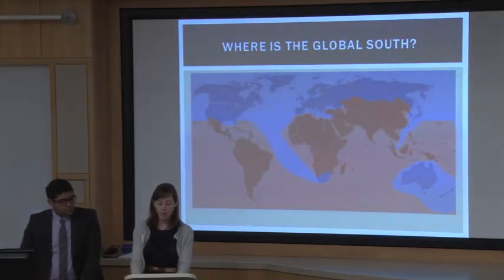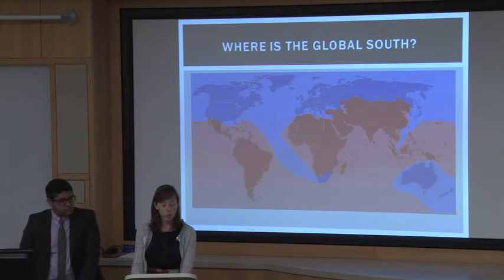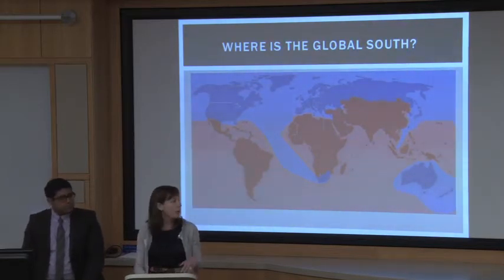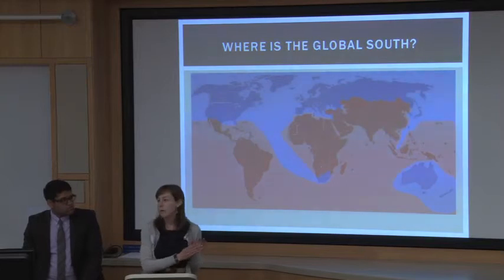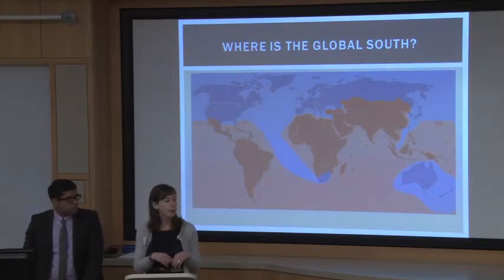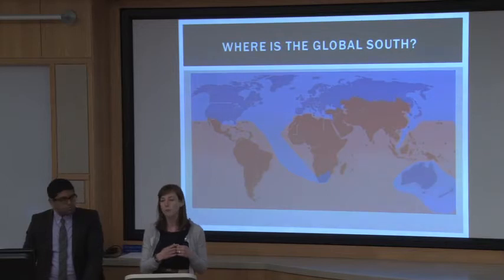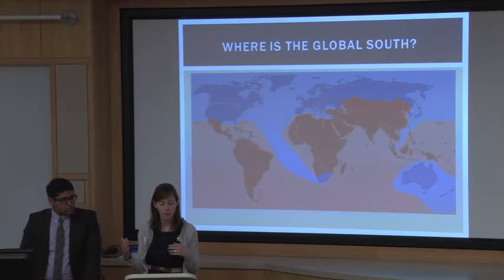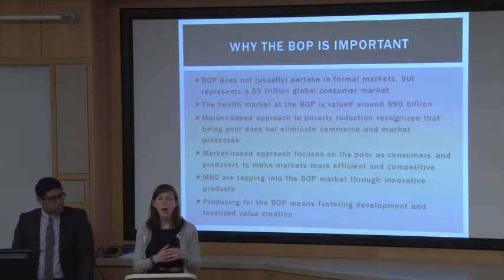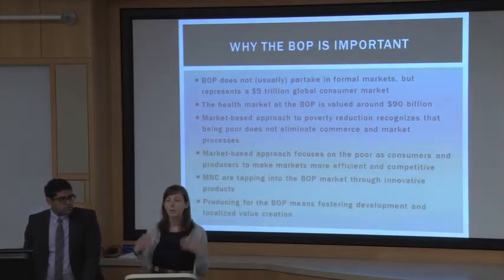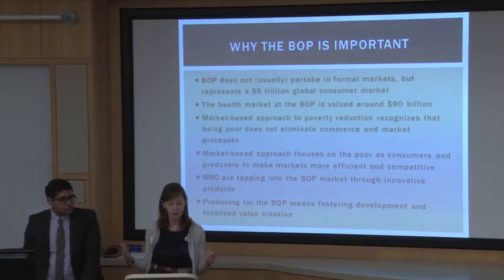Both subsistence populations and those living in extreme poverty typically live in what we deem the global south — what we normally consider to be developing or low and middle income countries. The terminology 'global south' and 'global north' is a new way of defining the relationship between what have typically been deemed aid-giving and aid-receiving countries. So why is the BOP important? Why do we have a whole session dedicated to the base of the pyramid?